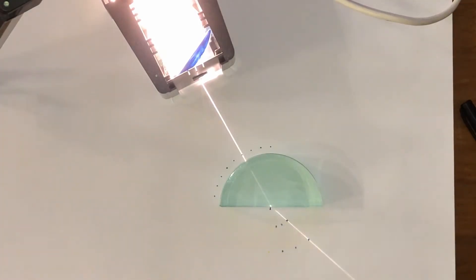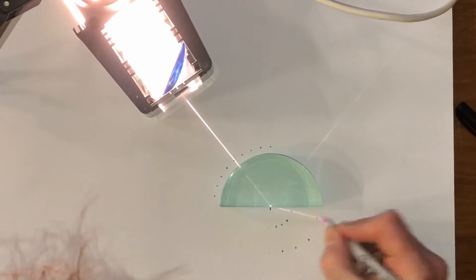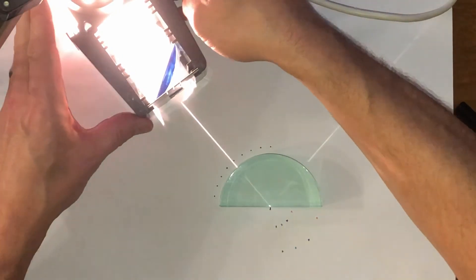I'm careful at larger refracting angles to make sure my crosses are in the middle of the ray coming out of the block.